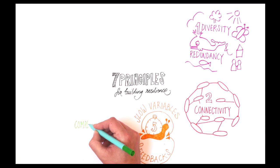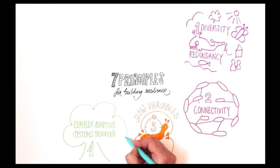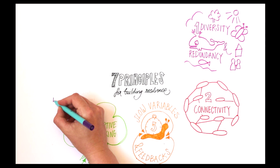Principle 4: Foster complex adaptive systems thinking. Complex adaptive systems thinking means accepting that within a social-ecological system, several connections are occurring at the same time on different levels. It also means accepting unpredictability and uncertainty, and acknowledging a multitude of perspectives.